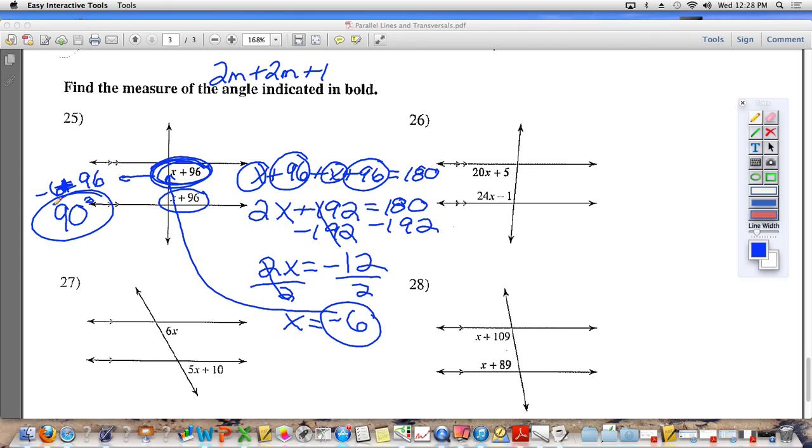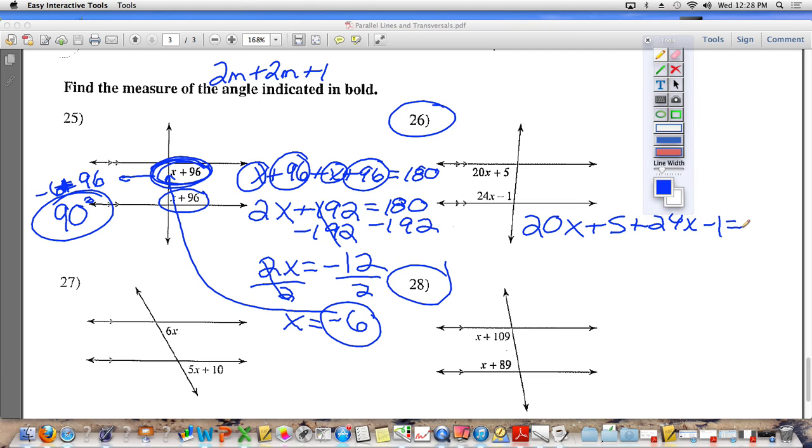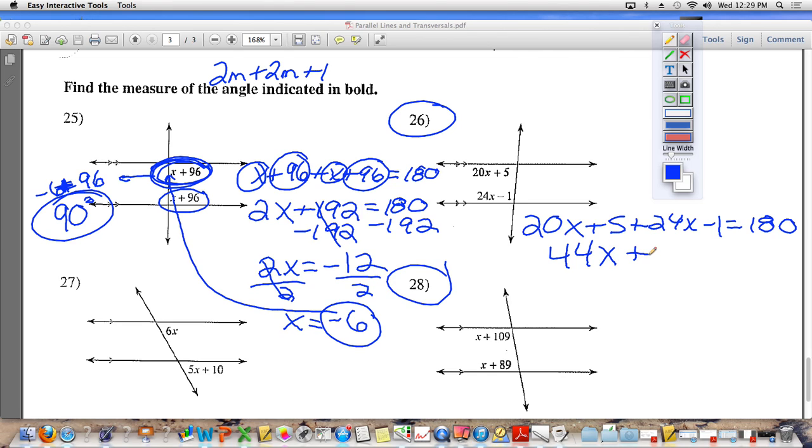You are going to do the same thing with number 26. You are going to do the same thing with number 28. 26 and 28, same thing. Add them together, put them equal to 180. Well, let's look at number 27. 26. You got a decimal, let's run through it. Number 26: 20x plus 5 plus 24x minus 1 equals 180. So help me out, combine your x's. You have 20x's and 24x's. How many x's is that? 44x. And a 5 minus 1 is 4 equals 180.